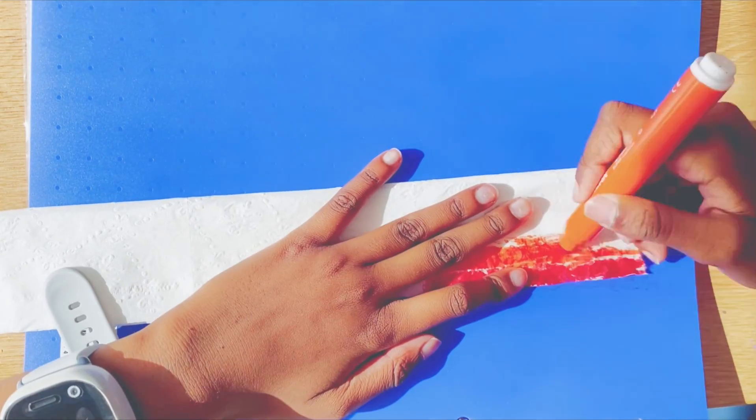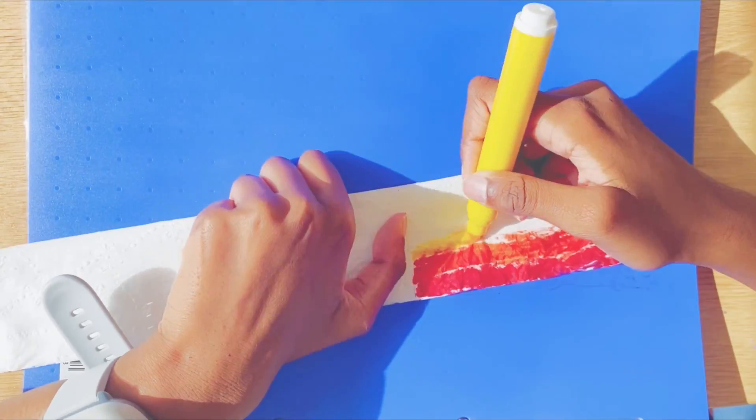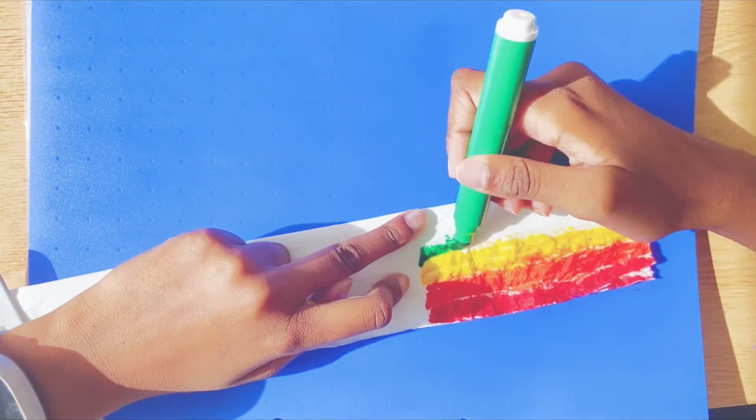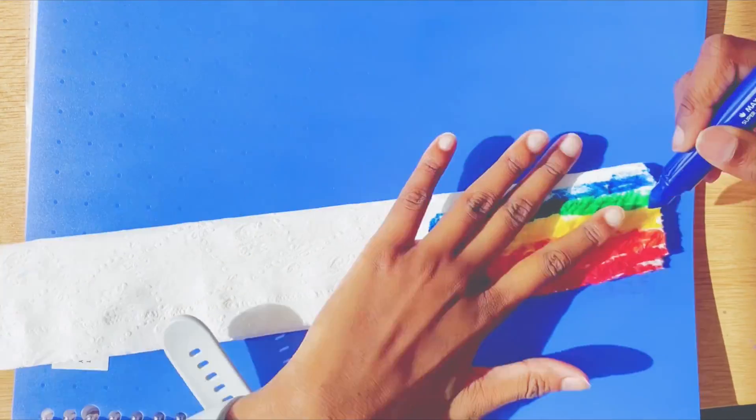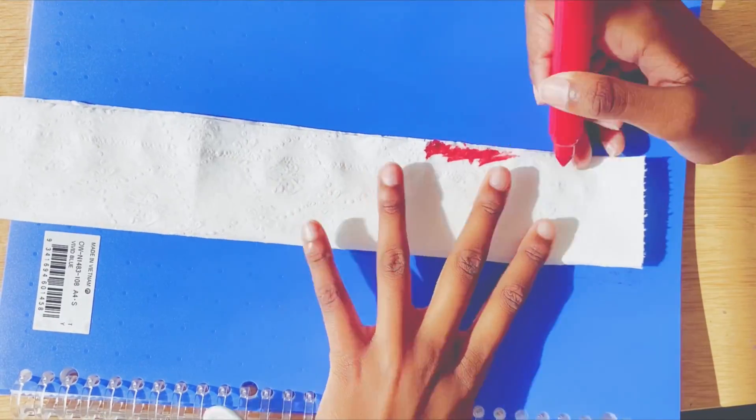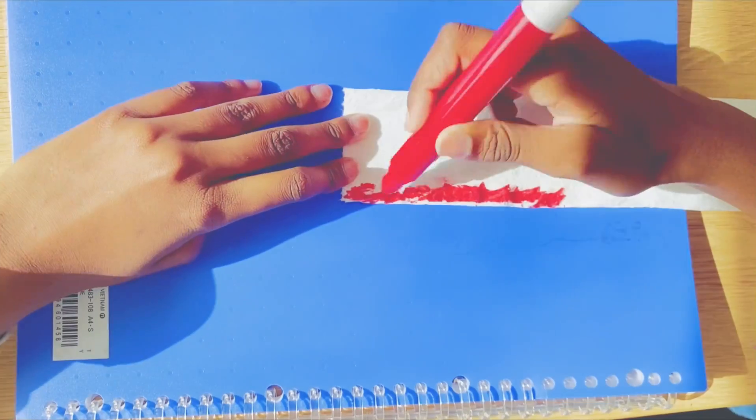Next I'm using washable rainbow colours. I'll carefully paint each end of the folded paper with different colours. Red, orange, yellow, green, blue and purple. It already looks so bright and happy.